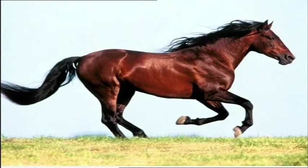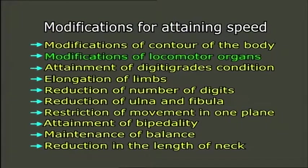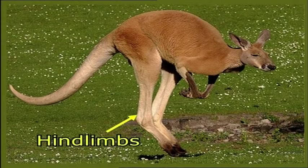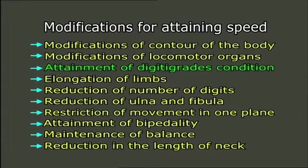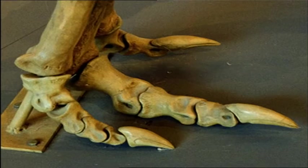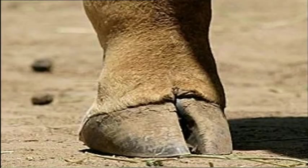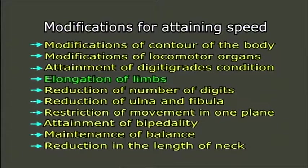Modifications of locomotor organs: in cursorial adaptation, the limbs are the main propelling organs which show great modifications for speed. The hind limbs show greater modifications than the forelimbs. Attainment of digitigrade condition: in cursorial animals the digitigrade condition becomes more preferred; the fastest representatives are digitigrade in nature. Highest perfection is reached in ungulates, where special sole pads in the form of hooves are developed at the digital tips to absorb shock and reduce mechanical friction during fast movement on hard surfaces.